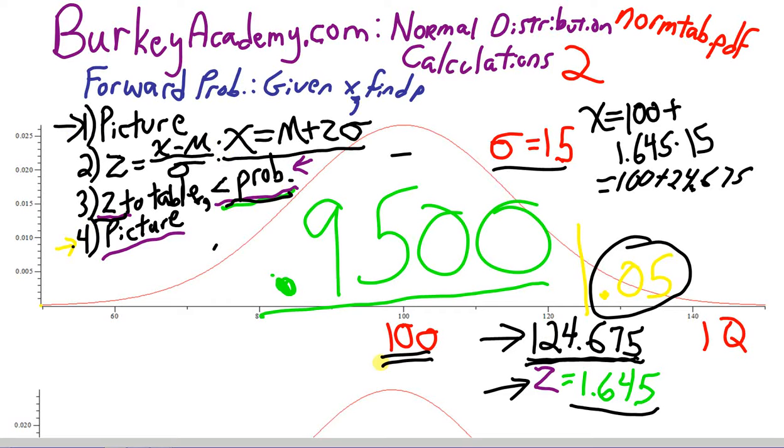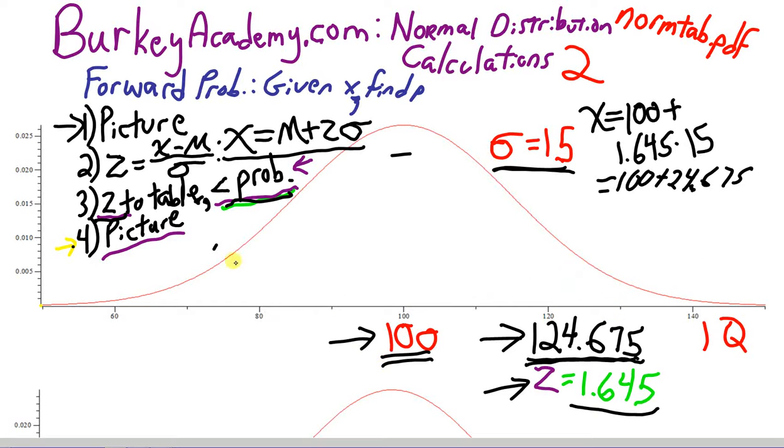So, this is how to do a backwards kind of problem. Now, in the next video, I'm going to use a different example so that we're not stuck with this IQ example all the time, a mean of 100 and a standard deviation of 15. And I'm going to do the most complicated kind of backward problem that you can do. So, let me just give you an introduction to what that is very quickly so you can see if you'd be interested in.